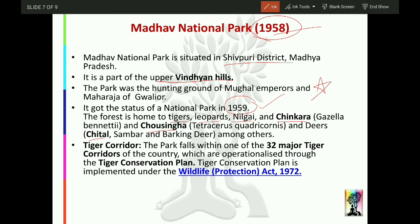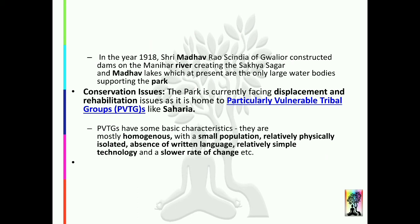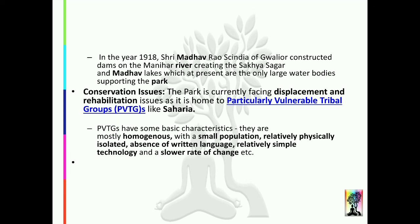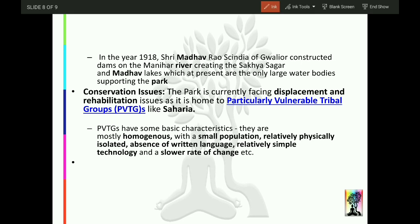Madhav National Park falls within one of the 32 major Tiger Corridors of India. Tiger Conservation Plan is implemented under the Wildlife Protection Act, 1972. In 1918, Shree Madhav Rao Sindhia of Gwalior constructed dams on the Manihar river, creating the Sakhyasagar and Madhav Sagar lakes. So the two dams inside Madhav National Park are on the Manihar river: Sakhyasagar and Madhav Sagar.